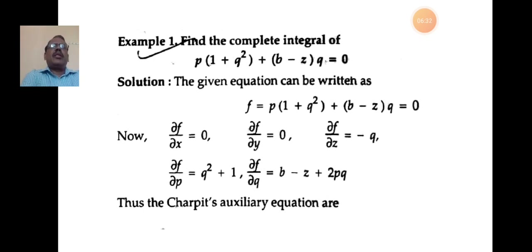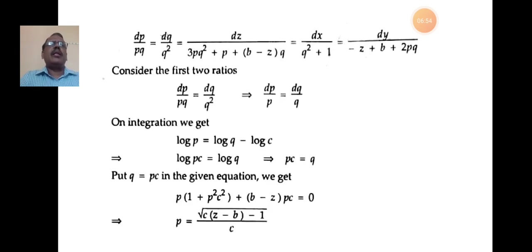Since the equation contains only p, q, and z terms, derivatives with respect to x and y are zero: ∂f/∂x = 0, ∂f/∂y = 0. Thus, by Charpit's auxiliary equation, we write: dp/(pq) = dq/(q²) = dz/(3pq²+p+(b−z)q) = dx/(q²+1) = dy/(−z+b+2pq).